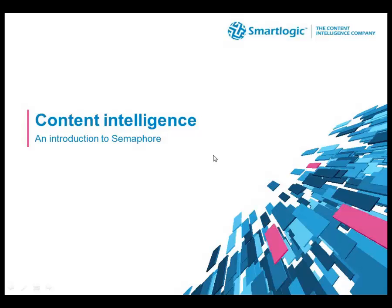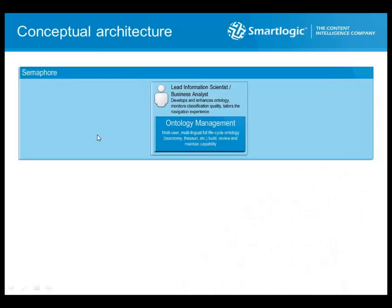Semaphore is our content intelligence platform. It captures the context of your business, then analyzes unstructured content to identify and present its value in any context. Semaphore is articulated around three main capabilities. First, ontology management — offering multi-user and multi-lingual ontology management with full lifecycle capabilities, allowing you to load existing ontologies or vocabularies as well as develop specific and proprietary vocabularies and map them across to published ontologies.